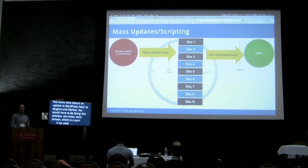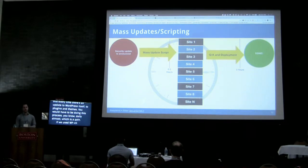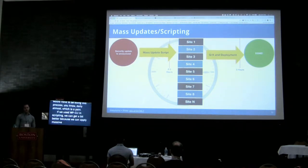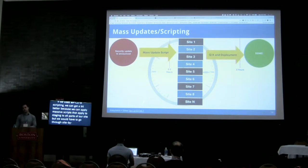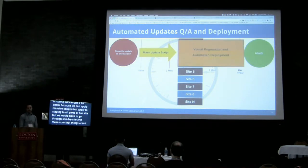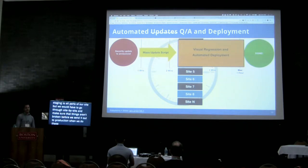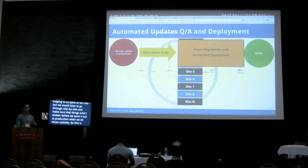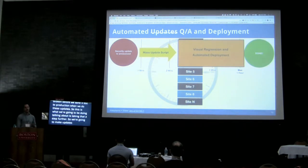If we use WP-CLI and scripting, we can get a bit better — we could run a mass update script to apply updates to the staging environments of all our sites. But then we still have to go site by site and do QA and deployment to make sure things look good before we send it out to production. So this is what we're going to talk about: taking that a step further — automating updates with WP-CLI, then using visual regression testing for QA, and if everything looks good, deploying automatically.